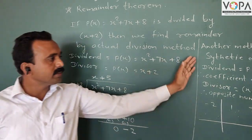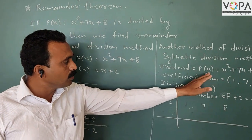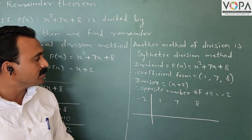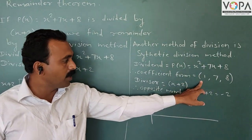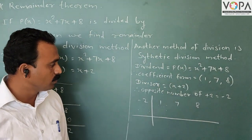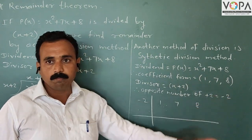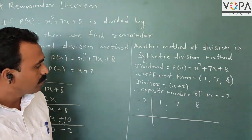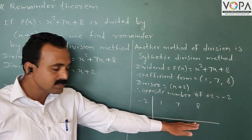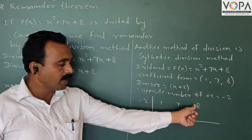Now we find the remainder using the synthetic division method. The dividend is x² + 7x + 8. Write the dividend in coefficient form: 1, 7, and 8. The divisor is x + 2, so write the opposite number of plus 2, which is minus 2. Draw two lines — one vertical and one horizontal — and write minus 2. Up top: 1, 7, and 8.